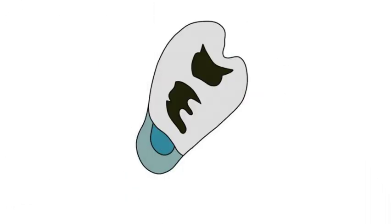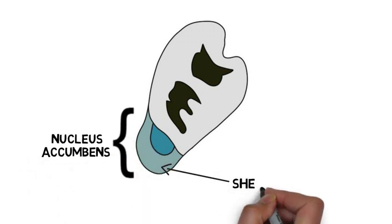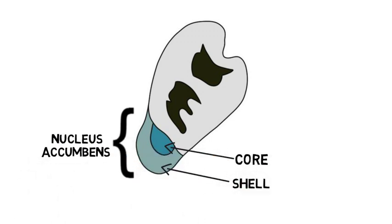The nucleus accumbens is typically divided into two anatomical components, an outer shell and a central core. There are thought to be functional differences between these two regions, where the shell is more associated with the limbic system, and the core is more strongly connected to the motor system.